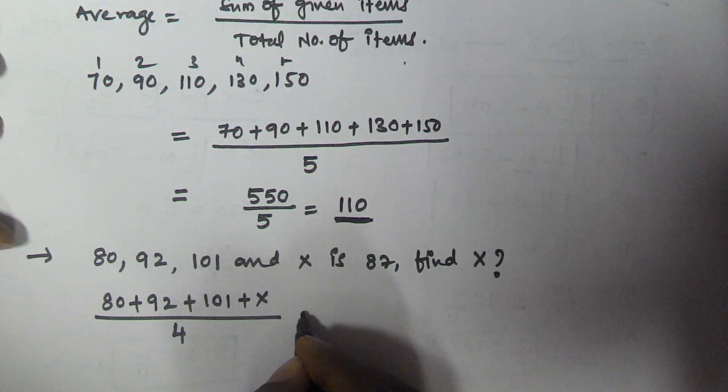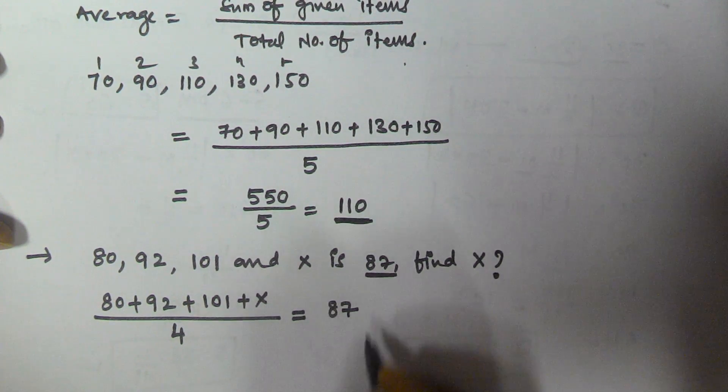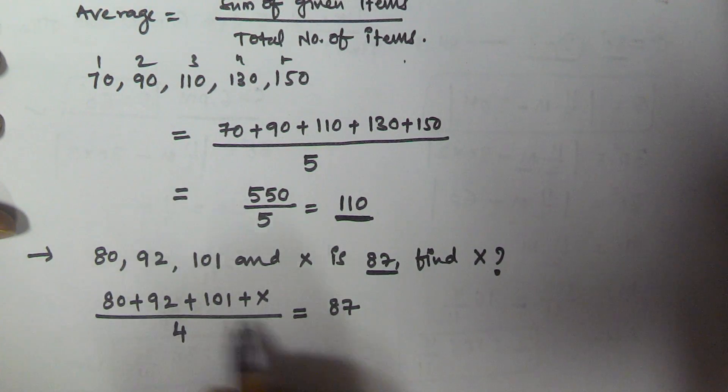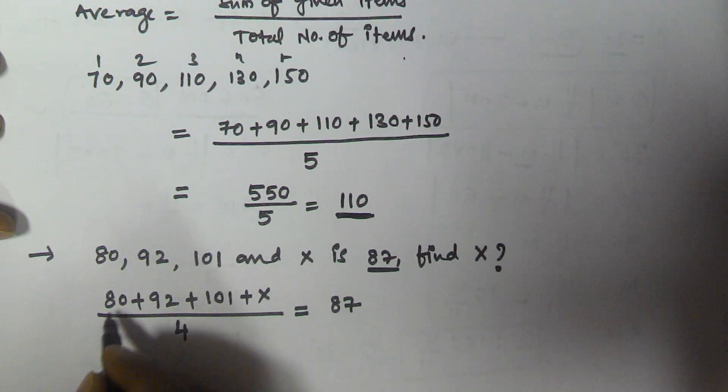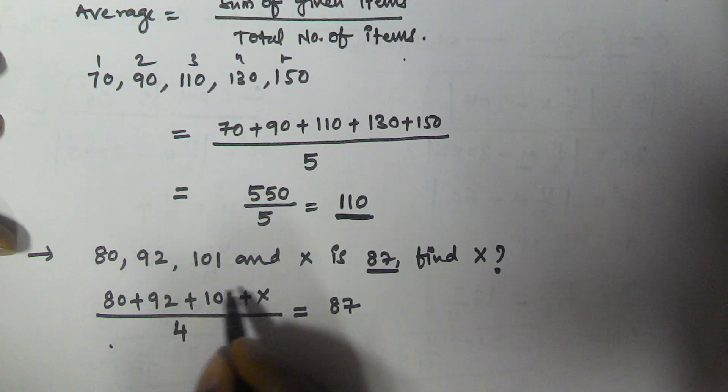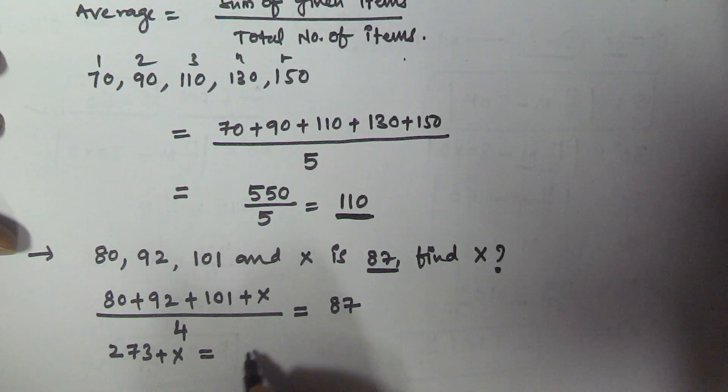This equals the average, which is given as 87. Now add all the numbers. Then this becomes 172, plus 101, so 273 plus x.